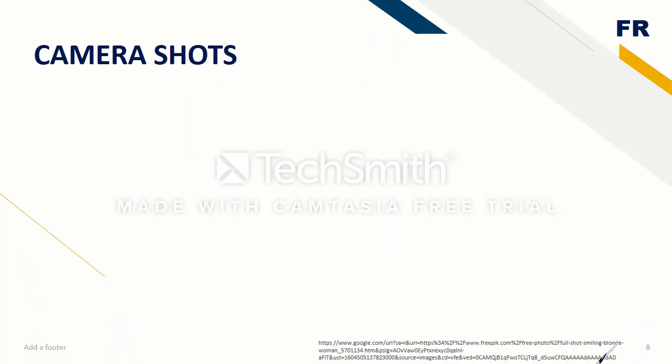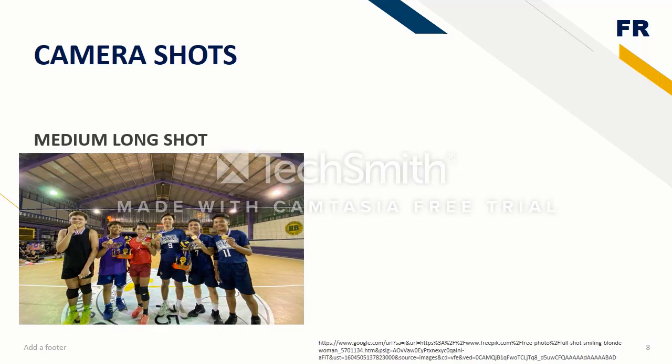The medium long shot frames a subject from the knees up. It is intermediary between the long shot and the medium shot. It slightly favors the background over the subjects and foreground. Medium long shots help an audience feel like they're actually there without making them feel uncomfortably close to the action.